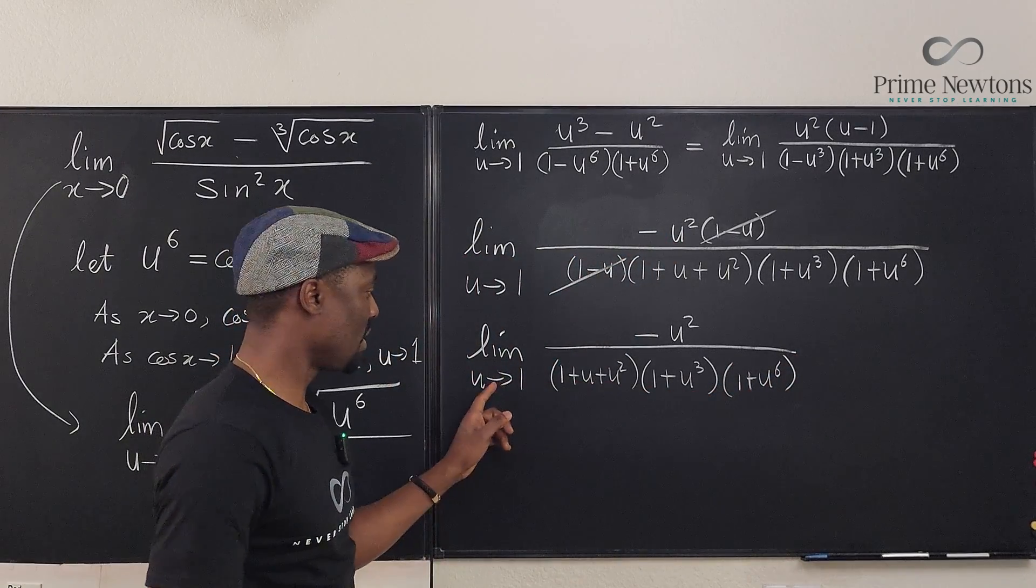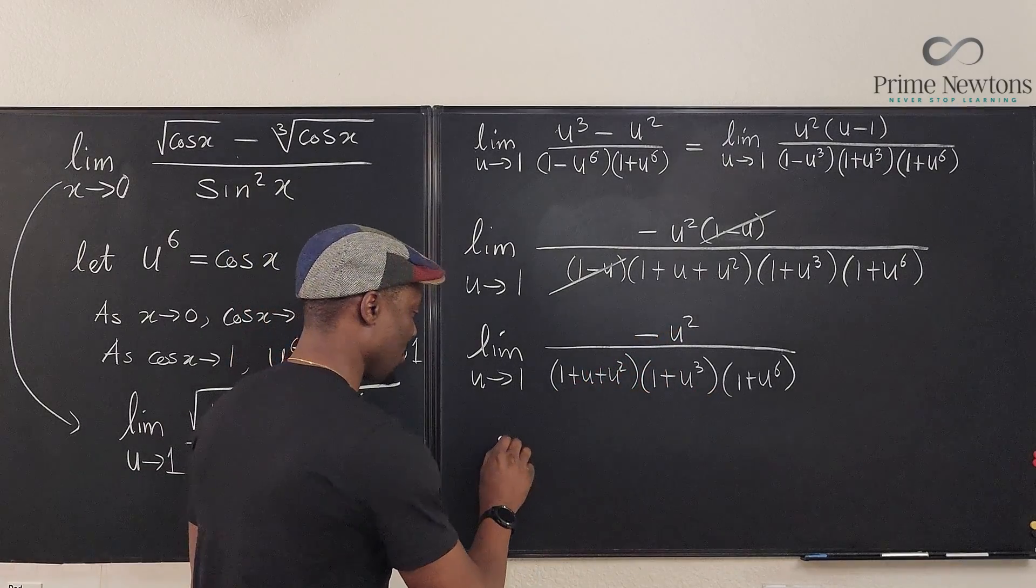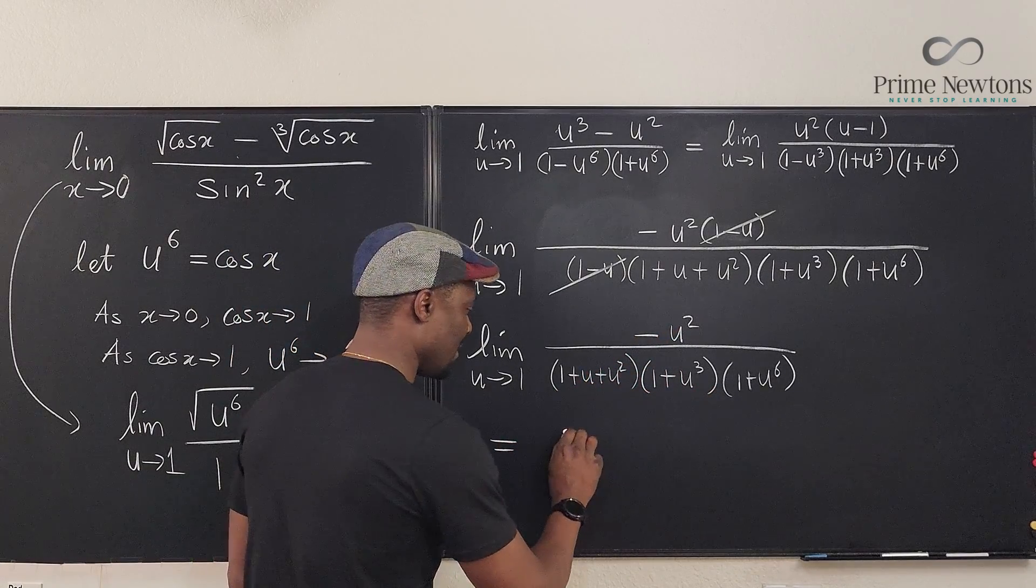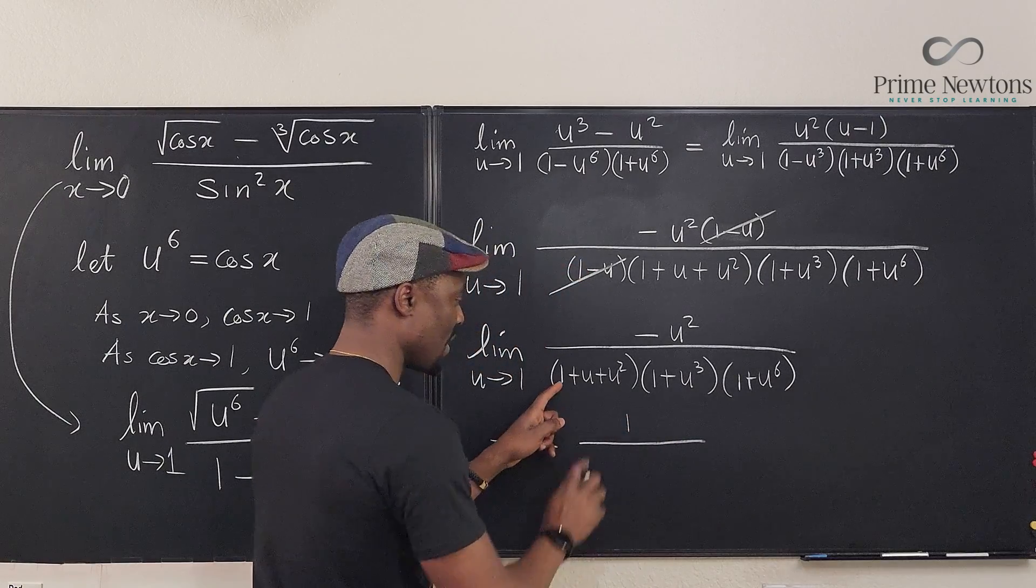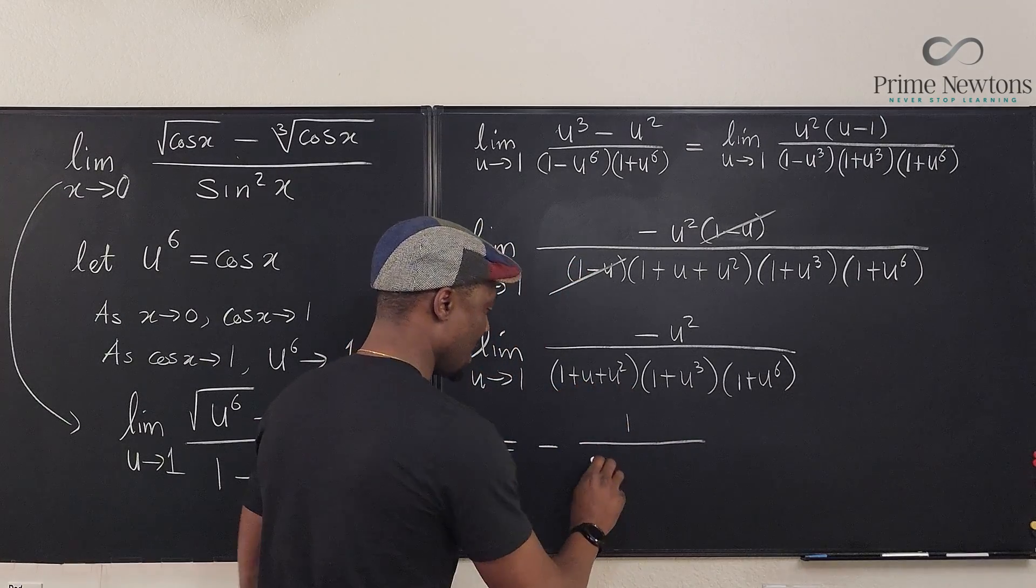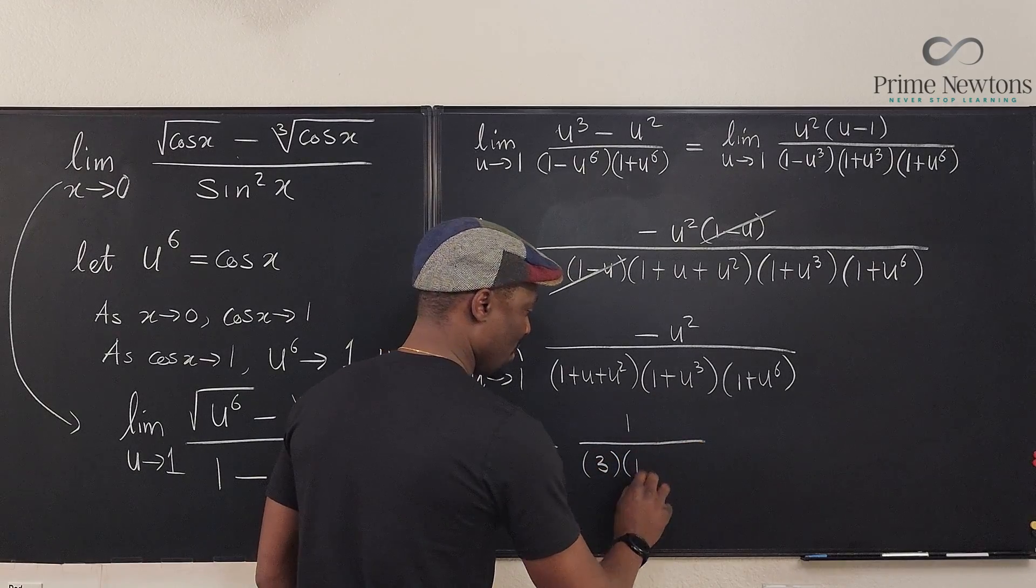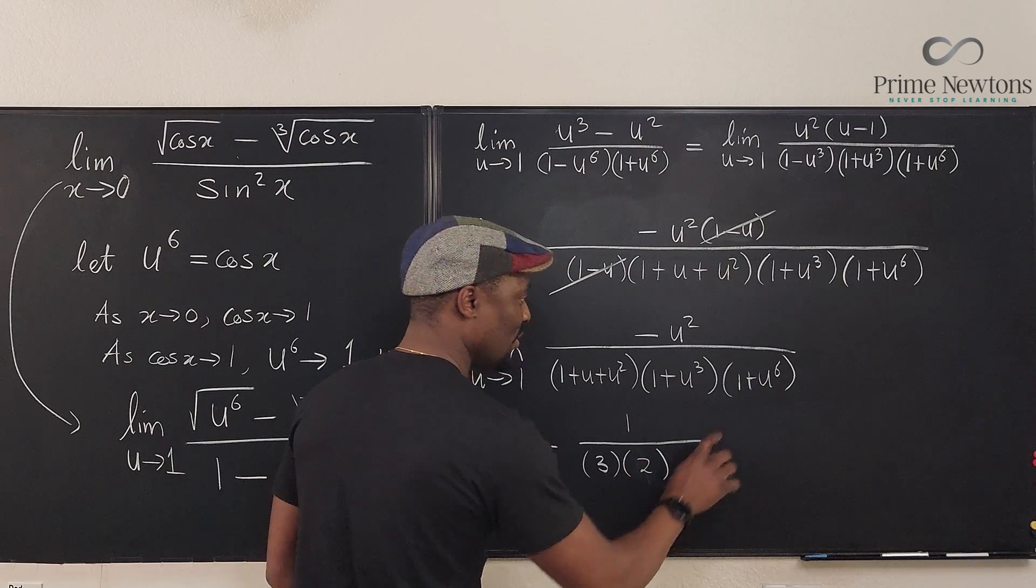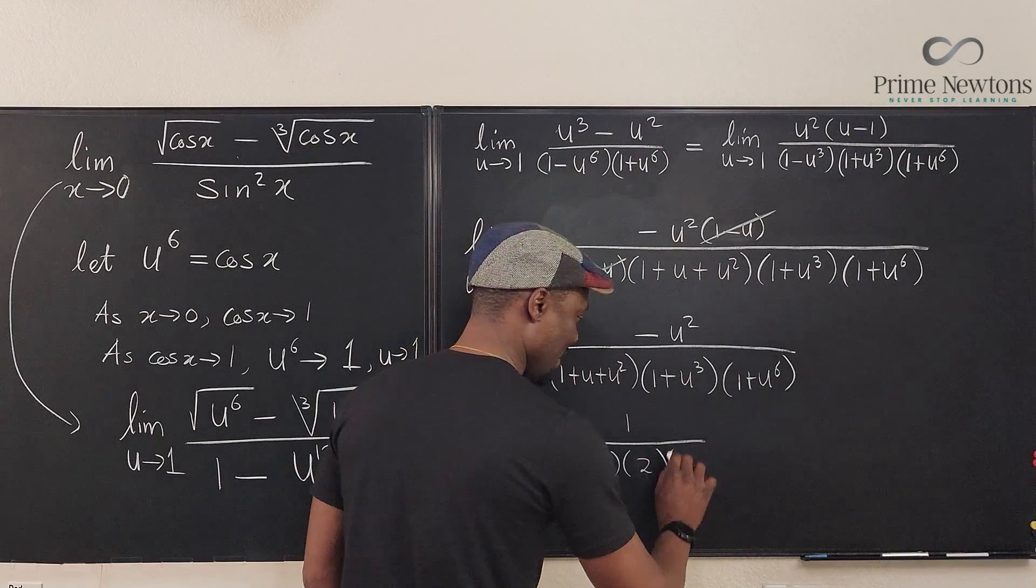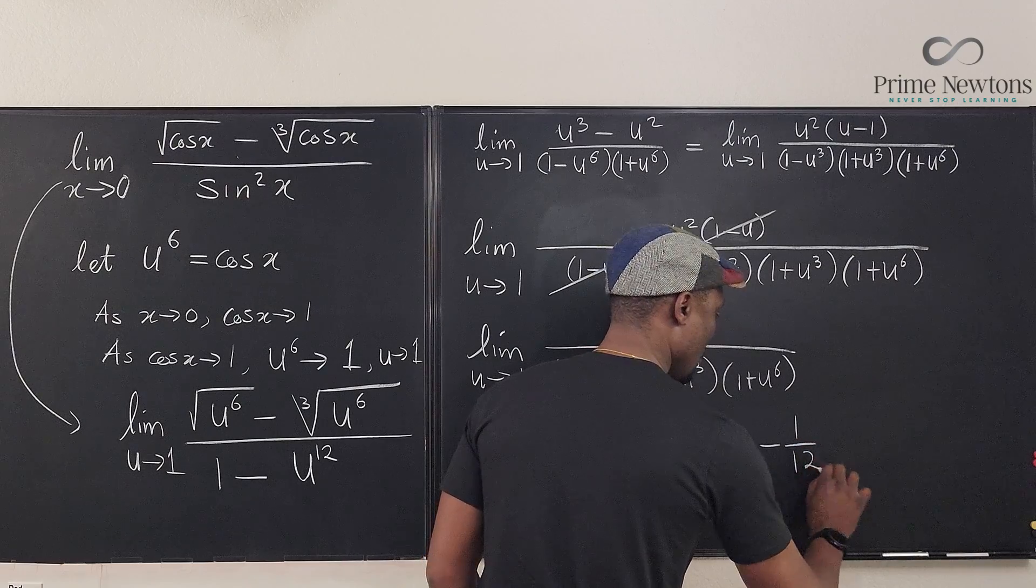When this is evaluated, plug in one for u everywhere. What do we get? This is going to be equal to negative one squared over one plus one plus one, that's three multiplied by one plus one, which is two. Let's write it multiplied by two. That's equal to negative one over 12.